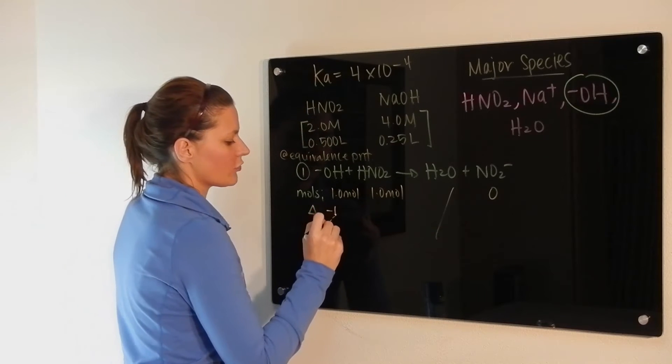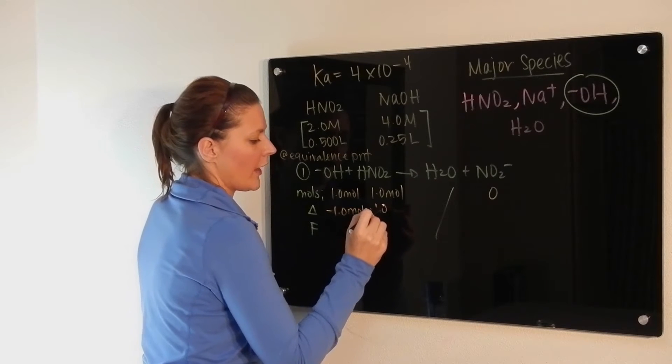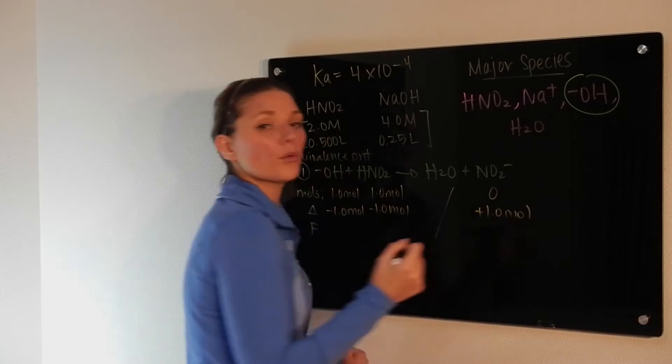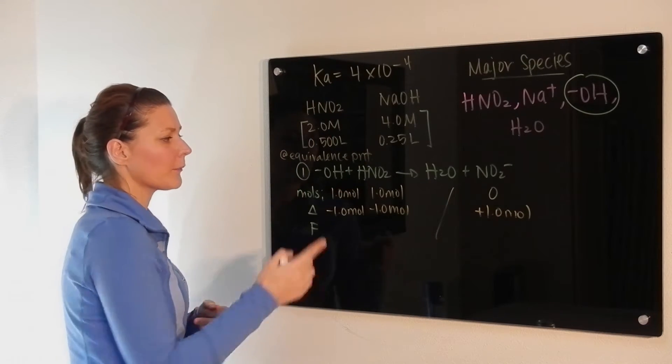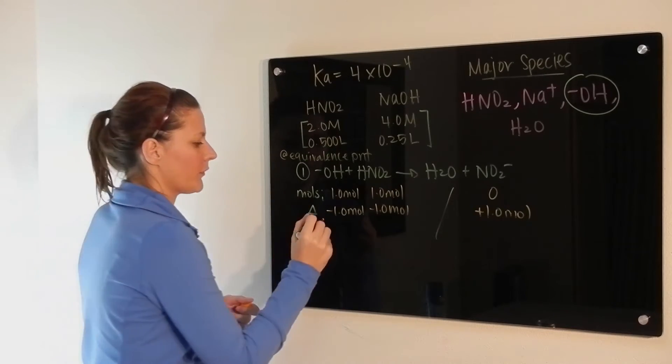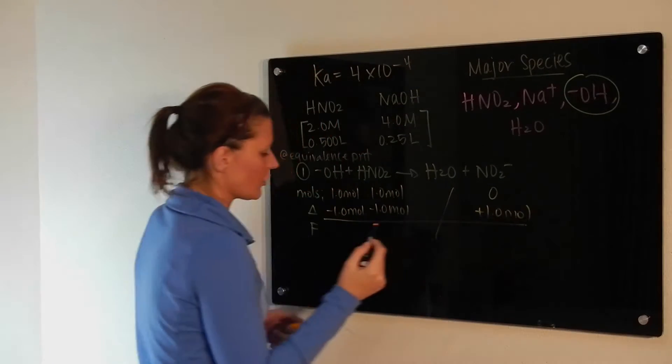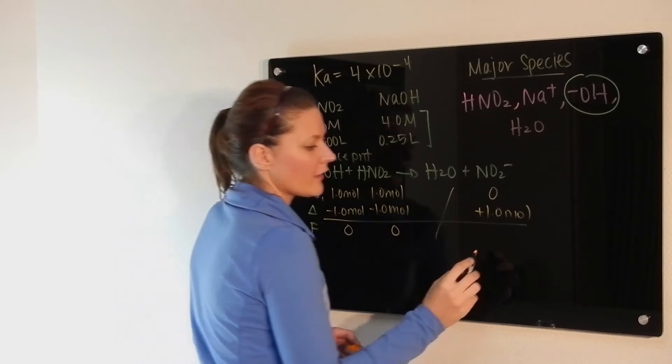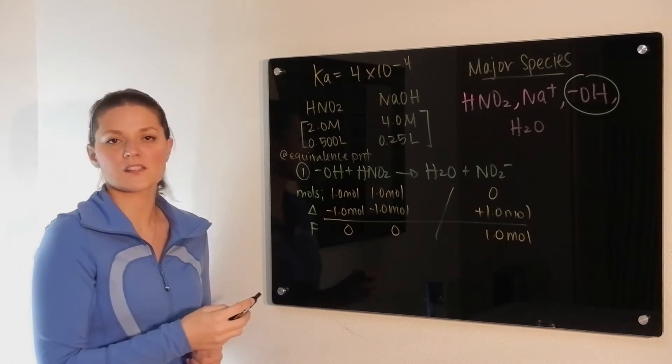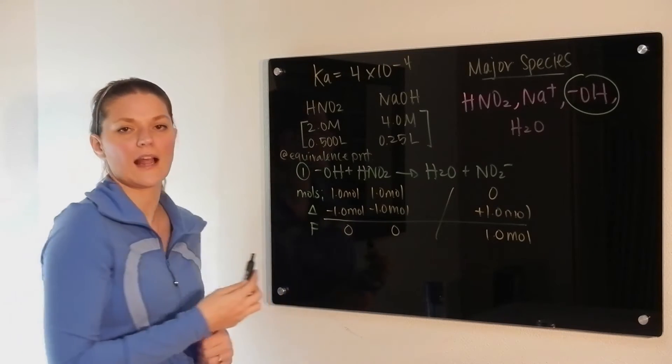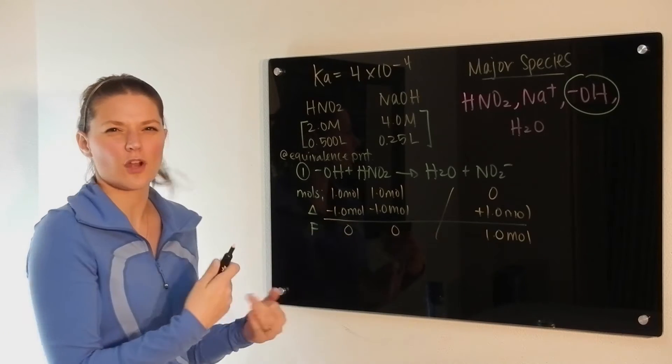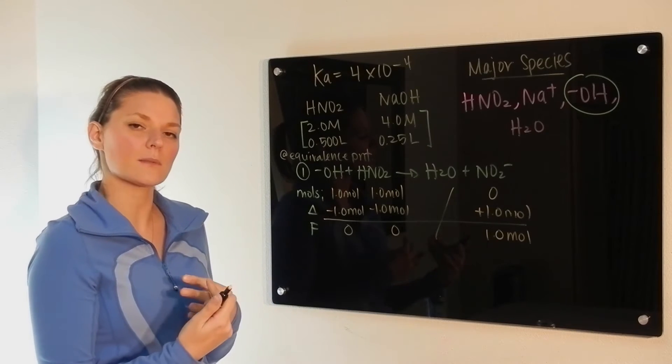So in this case, there's no real limiting reactant. You're just going to use them both up and you're going to form this. Remember, they change all by the same number because there's a 1 to 1 to 1 mole ratio, so they're going to have exactly the same change. When you look at the final conditions in the solution, you don't have any of that, none of that. All you're left with is this 1 mole of nitrite. This point is not a buffer because you don't have any conjugate acid left over, so no Henderson. And we don't have any amount of hydroxide or H+, so we can't solve for pH at this moment.